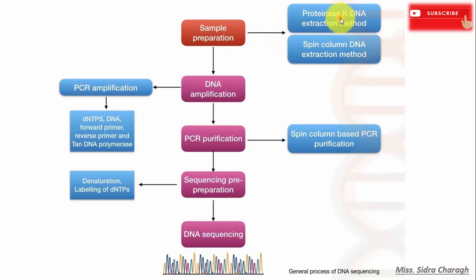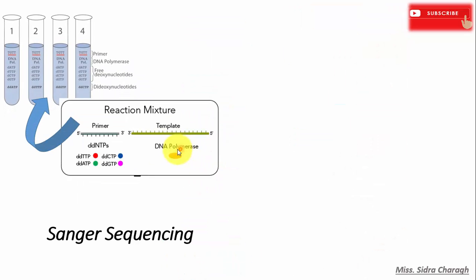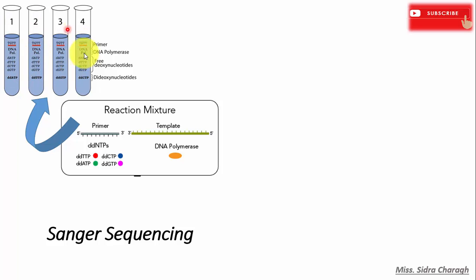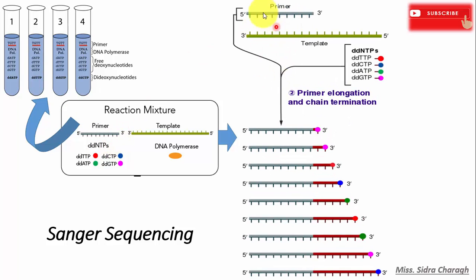The process of chain termination starts with sample preparation and DNA extraction, which can be achieved using the proteinase K method or phenol-chloroform extraction. In the next step, PCR amplification is performed by designing four different reactions. Each tube contains the same components — primer, template, DNA polymerase, and dNTPs — but each has an extra specific dideoxynucleotide (ddNTP) added.